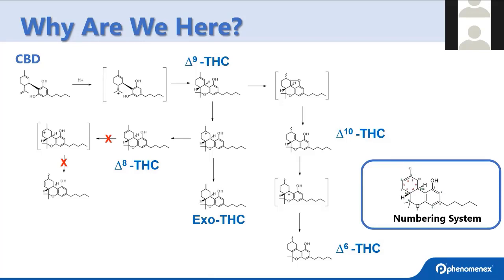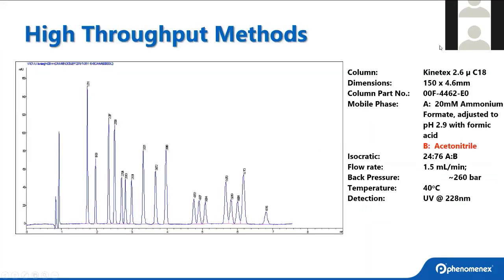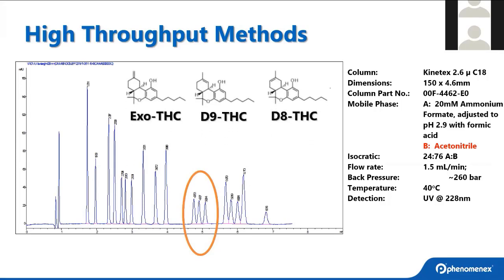There are a lot of different nomenclatures for the different THC isomers. The ones I commonly use are delta 8, delta 9 THC, delta 10, exo-THC (the double bond up there), and delta 6. Going back to your most traditional high-throughput method — typically acetonitrile-based — acetonitrile gives a fast analysis, low back pressure, and because of its solvent strength it allows many people to run isocratically. Acetonitrile-based methods can chromatographically resolve a few of the isomers: in this particular method we have good resolution of exo-THC, delta 9 THC, and delta 8 THC — that's the order of elution in this case.